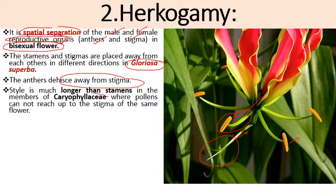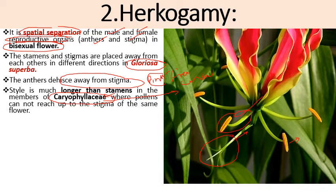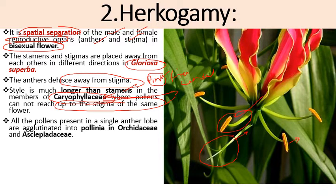In members of family Caryophyllaceae — which includes important ornamental plants like pink and carnation — the pollens cannot reach up to the stigma of the same flower because the style is much longer than the stamens, so the pollen grains are unable to reach the stigmatic surface, ensuring cross pollination. In addition, in the family Orchidaceae, the second largest family after Asteraceae with approximately 20,000 species, pollen grains are agglutinated and transferred as a single unit.